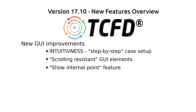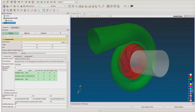Changes in the graphical user interface. The word that most closely describes the change the GUI has gone through is intuitiveness. The graphical user interface is much more synoptic now. There have been changes in the order of the GUI elements — you can now set up the case in a step-by-step manner, with the most important setup first, highest priority first. The new GUI comes with scrolling-resistant combo boxes, so you can scroll over all GUI elements without fear of unwanted changes to the case setup. And the last GUI innovation is the show internal point feature — you can now easily and quickly find and set the coordinates of the internal point in the mesh.